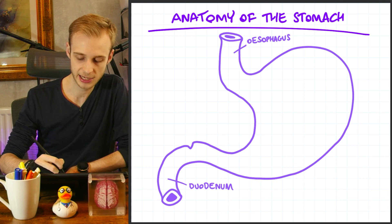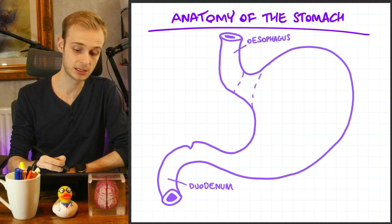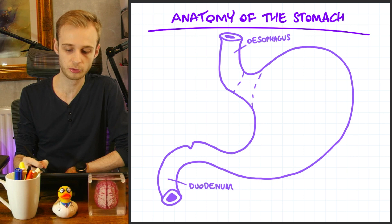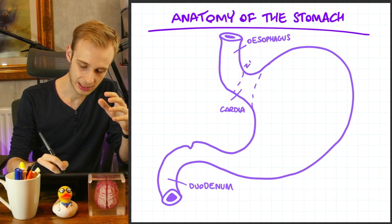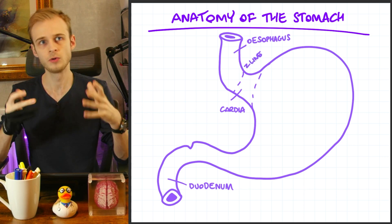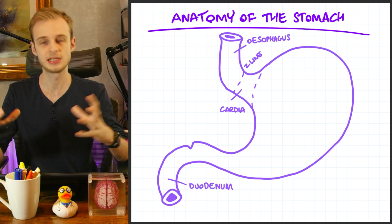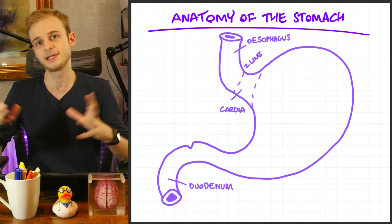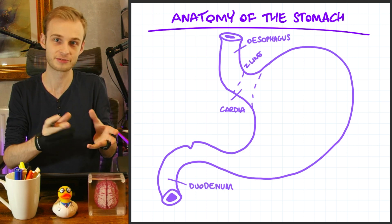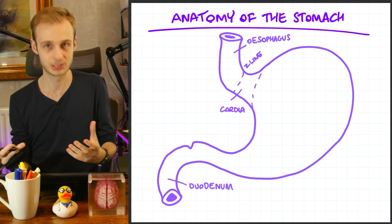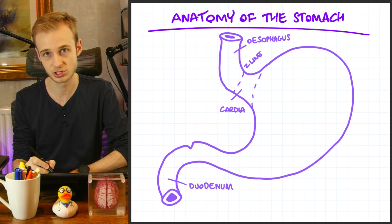The first part of the stomach we're going to name is the cardia, which I'm drawing on here. It's essentially the part closest to the esophagus, before we have this large upwards curve. Where the cardia begins is a line known as the Z line — the point at which the esophageal mucosa starts to change into the gastric mucosa, the tissue that lines the inside of the stomach. This tells us we're passing through the gastroesophageal junction, the junction between the stomach and the esophagus. When all of this comes together and we start to transition into the stomach, this is when we transition into the cardia.